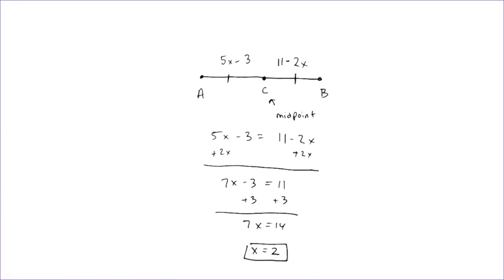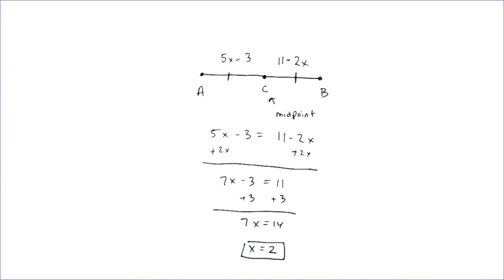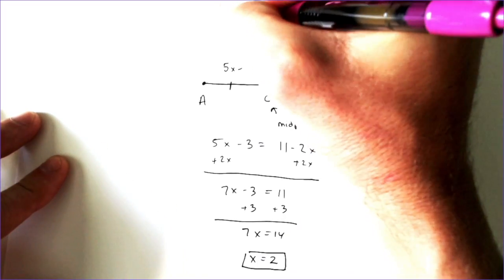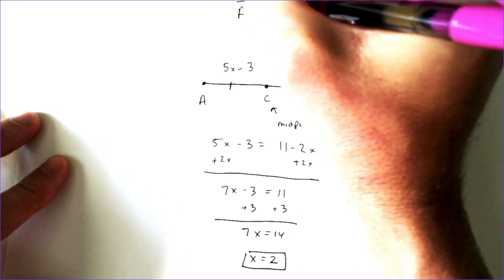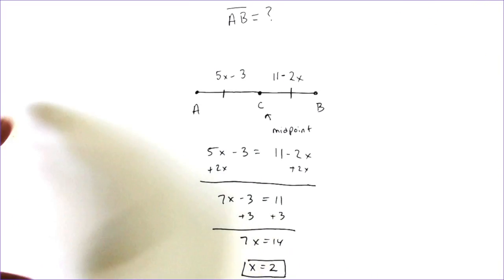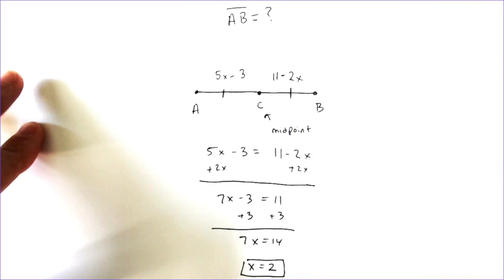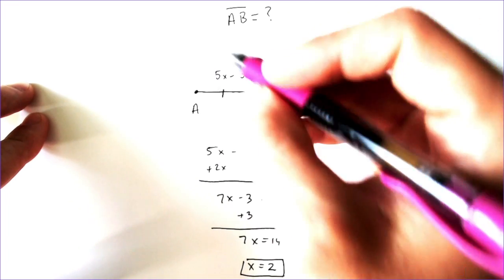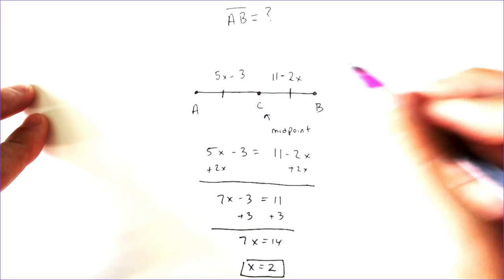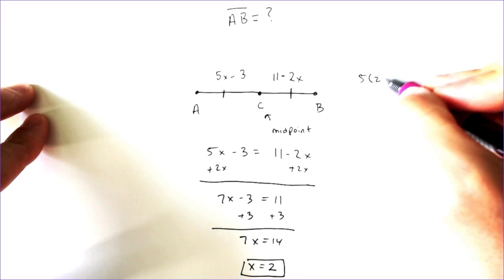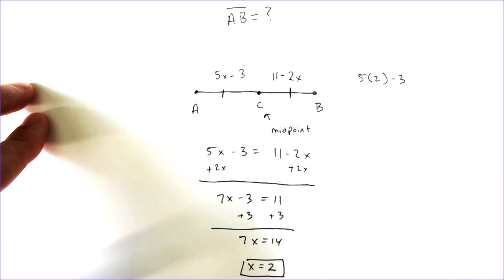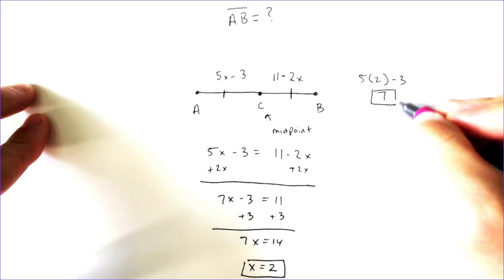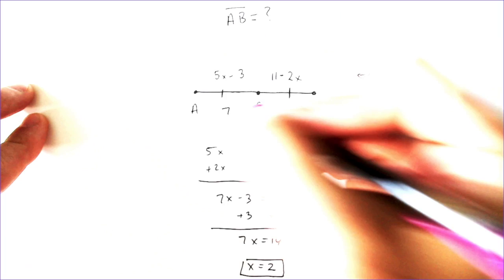That would be the value of x. A lot of times with these midpoint problems, they would like to know what is the length of a given portion of the line segment. So, I want to know what is the length of AB. We can plug in 2 to figure that out. If I plug in 2 for x, I would have 5 times 2 minus 3, which is 10 minus 3, which is 7. So that means from A to C it was 7.